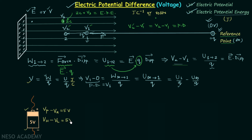We have conducting wires connected to both terminals. If there is no loss in the wire, the potential at the end connected to the positive terminal equals Vp, and the end connected to the negative terminal equals Vn. We can represent a battery in circuit diagrams with a symbol where the longer line represents the positive terminal and the shorter line represents the negative terminal, giving Vp minus Vn equal to 5 volts.